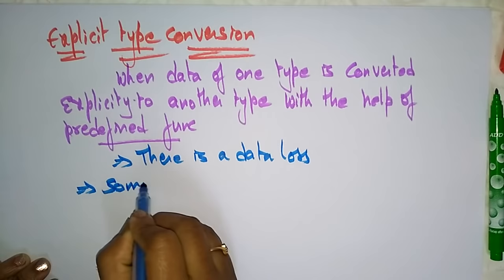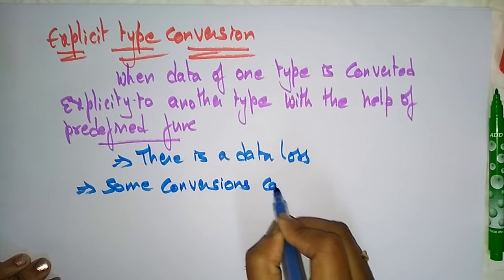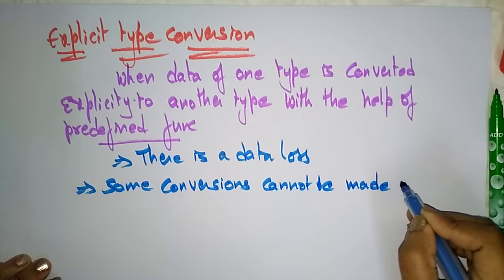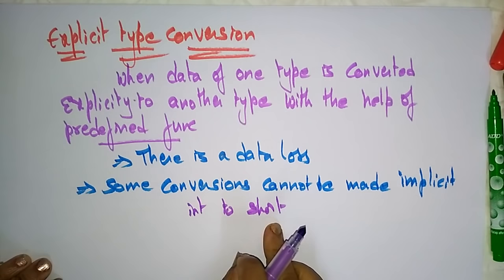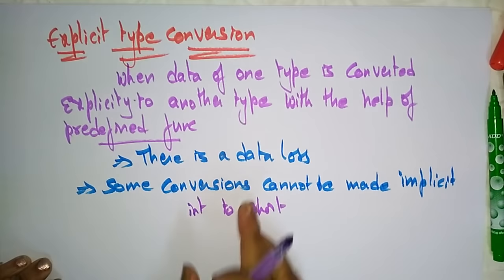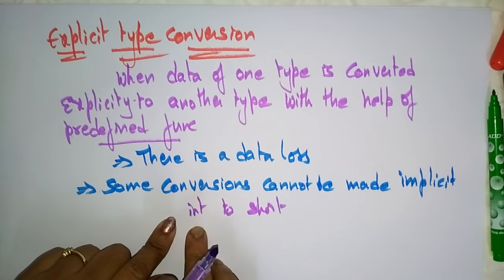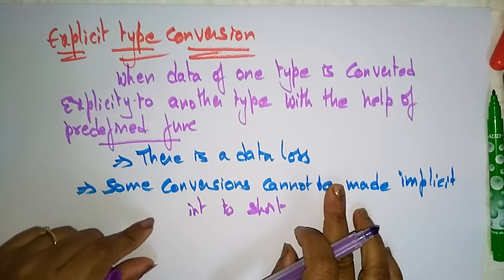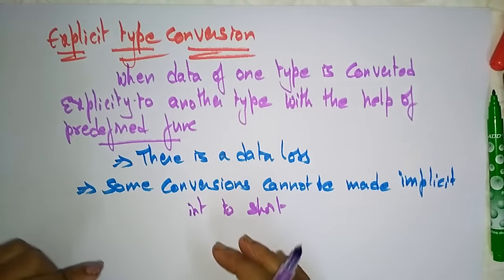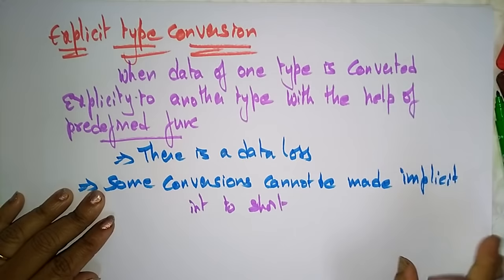Some conversions cannot be made implicitly — for example, integer to short. You can't implicitly convert integer to short because the integer range is greater than the short range. When converting forcefully from integer to short, there is a chance of data loss. These types of conversions are called explicit type conversion.